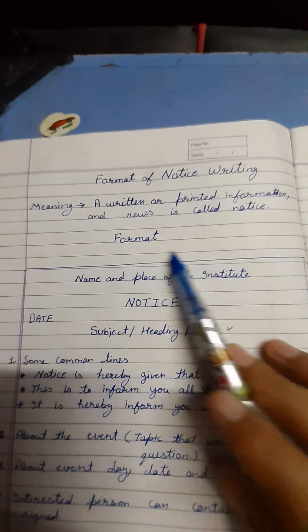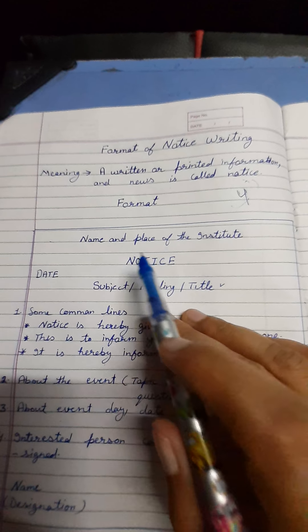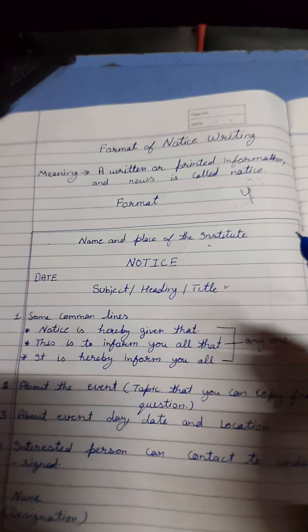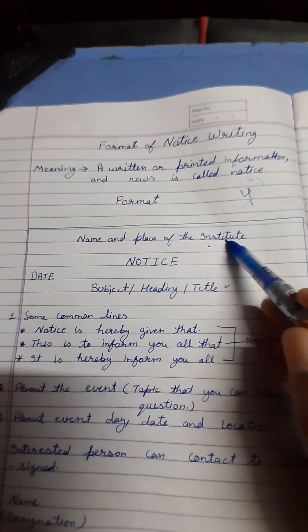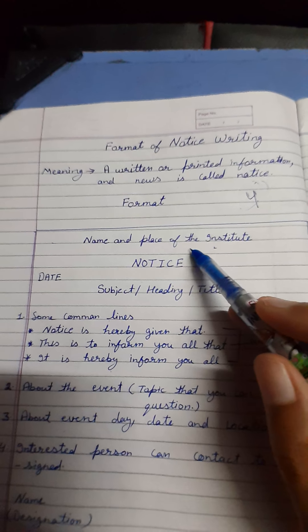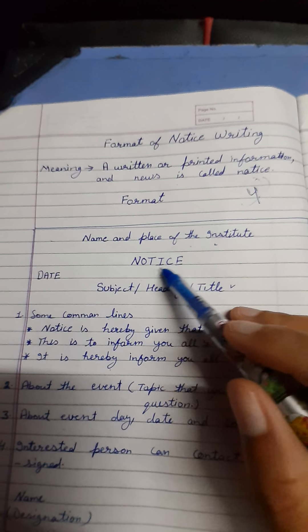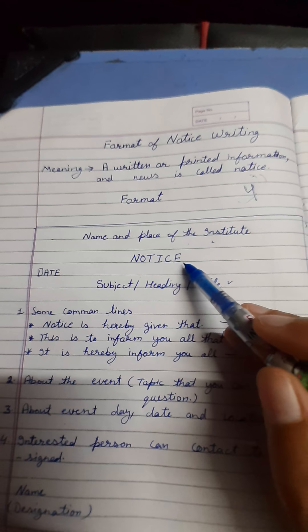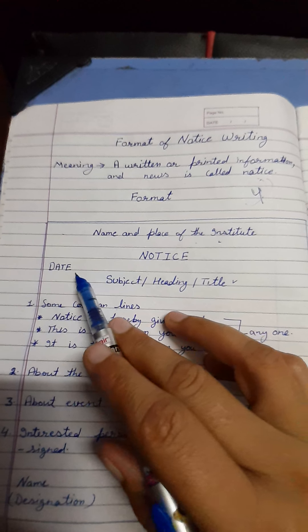Now let's discuss about the format of notice writing. The most important thing is it should be in a box, and it carries around four marks. In the very starting, we write the name and place of the institute — the name of whoever is writing the notice. Then we keep a one line gap, after which we write 'NOTICE'. Notice should always be in capital letters — every alphabet should be in capital letter.